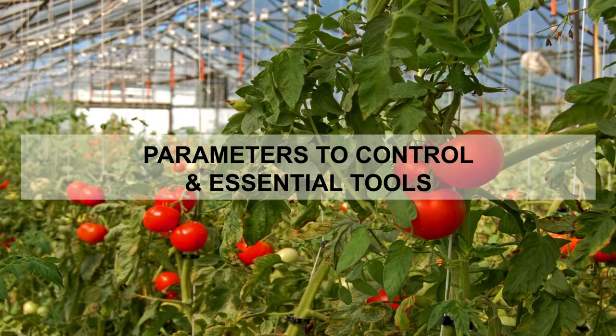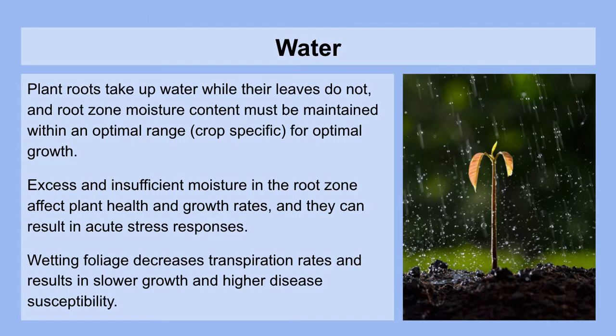Parameters to control and essential tools. The first important environmental parameter is water. Plant roots take up water while their leaves give out water, and so root zone moisture content must be maintained within an optimal range for healthy roots and optimal growth rates in plants. Excess and insufficient moisture in the root zone both affect plant health and growth rates, and they can result in acute stress responses that reduce the crop quality and yield, thereby losing people money.